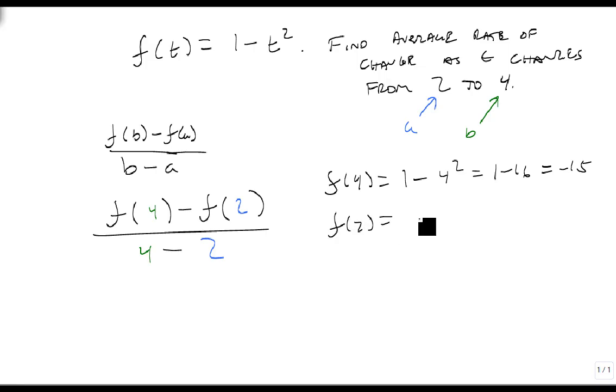And f of 2 is 1 minus 2 squared, which is 1 minus 2, which is minus 1. So replacing these gives us minus 15 minus a minus 1, all over 4 minus 2, which becomes minus 15 plus 1, which is minus 14, over 4 minus 2, which is 2, which is minus 7. So the average rate of change for this function from 2 to 4 is minus 7.